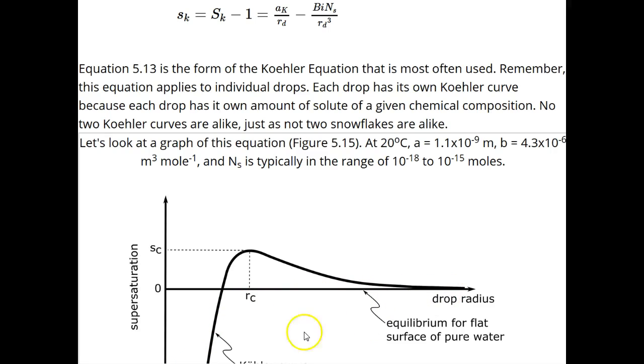And at small r, it is greater negative than the curvature effect is positive. As the drop gets bigger, then the curvature effect becomes more important, and then the drop equilibrium supersaturation follows the curvature effect.